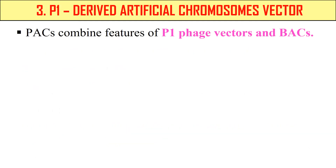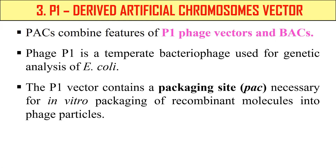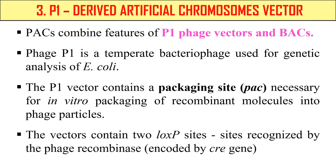The next example is PAC — the P1 Derived Artificial Chromosome vector. It has features of both P1 phage vectors and bacterial artificial chromosomes. P1 is a temperate phage generally used for genetic analysis of E. coli. The PAC vector contains a PAC site — the packaging site necessary for in vitro packaging of the phage. It also contains two loxP sites, which are recognized by Cre recombinase and are required for circularization of the DNA when injected into E. coli. The PAC vector can be used for construction of genomic libraries of mouse, human, and Drosophila.